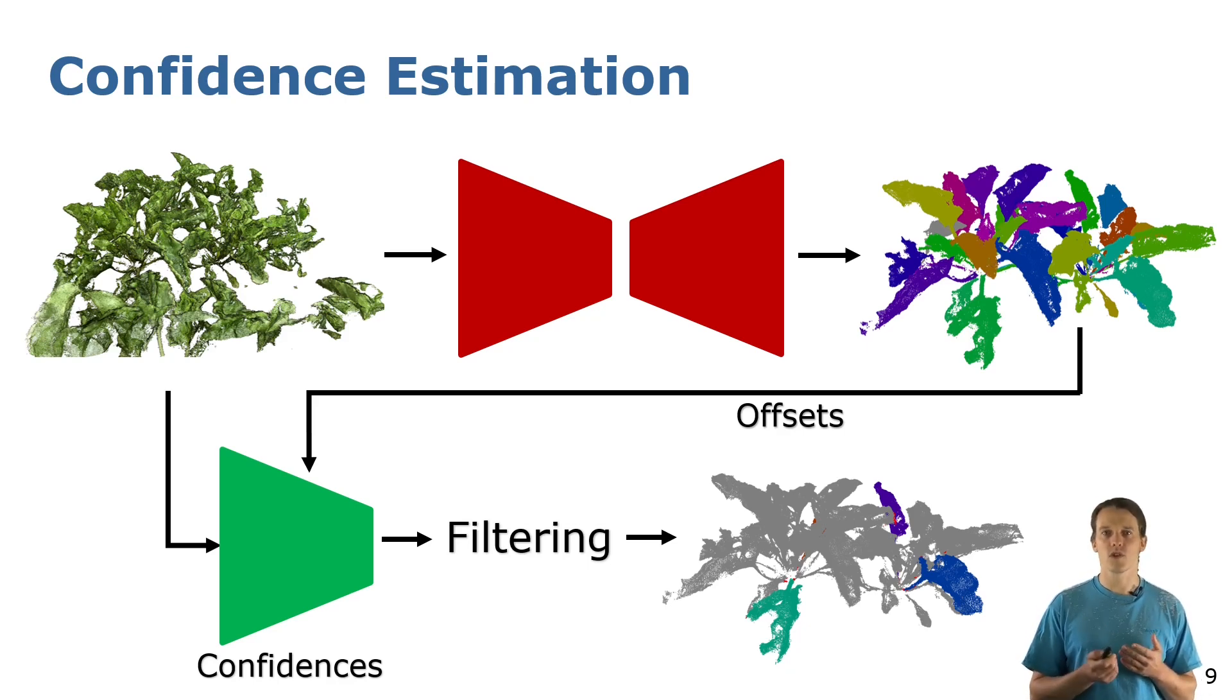We can then use these confidences to filter out the predictions. For this we need to define a ratio of kept predictions with respect to the total amount of predictions.